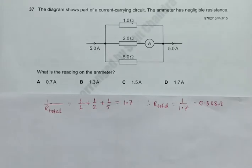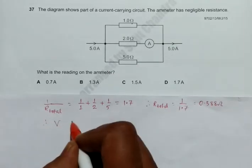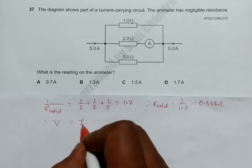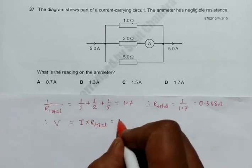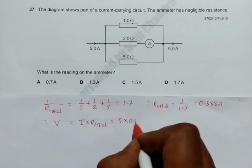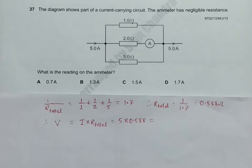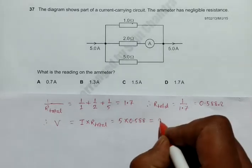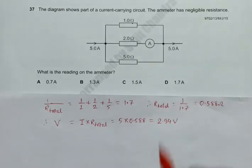Now that means the overall PD across this arrangement will be V = total current times total resistance. So it will be 5 amperes times 0.588. If I do this again in the calculator, 5 times equals, it is 2.94 volts. Now if we have to calculate